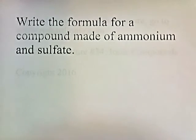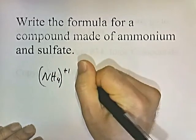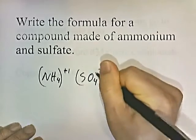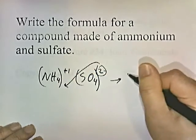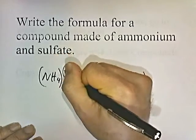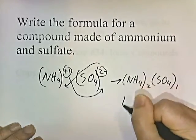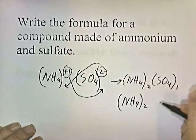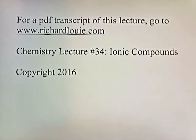Write the formula for a compound made of ammonium and sulfate. Ammonium is NH4 with a plus one charge. Sulfate is SO4 with a negative two charge. Criss-cross the numbers: the formula is (NH4)2SO4. For a PDF transcript of this lecture, go to www.richardlui.com. This has been chemistry lecture number 34: ionic compounds.